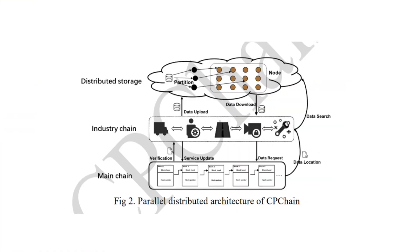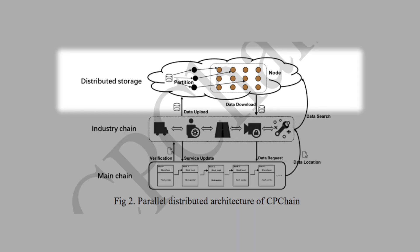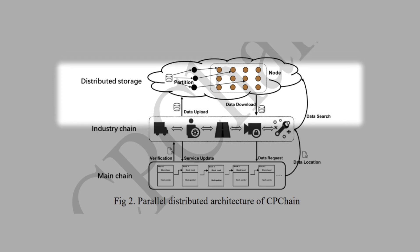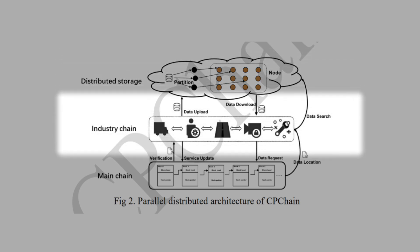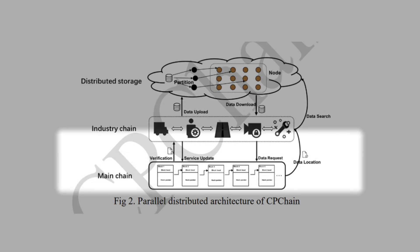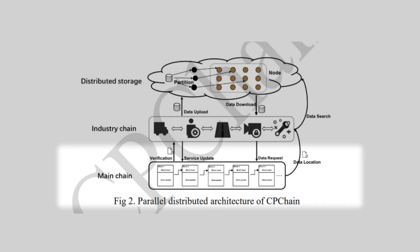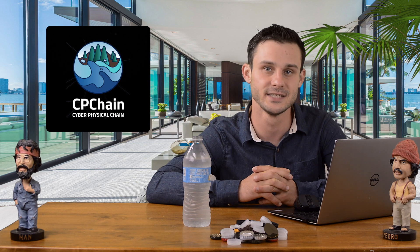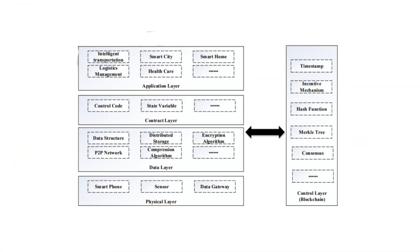CP Chain is constructed using a parallel distributed architecture. With CP Chain, there is a distributed cloud storage layer where data is stored off-chain. Parallel to this layer is the blockchain, which can be industry-specific chains connecting back to the CP mainchain. Moving deeper into the design, they introduce a hierarchical structure made up of the physical layer, data layer, contract layer, and the application layer.